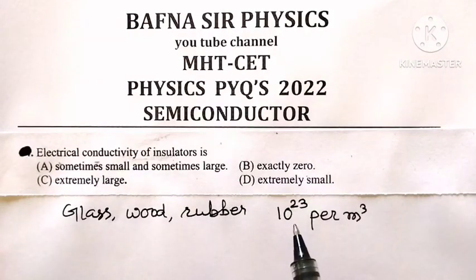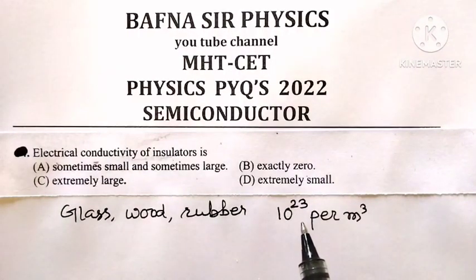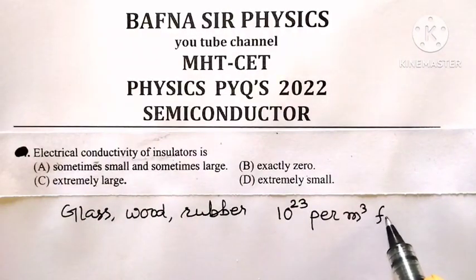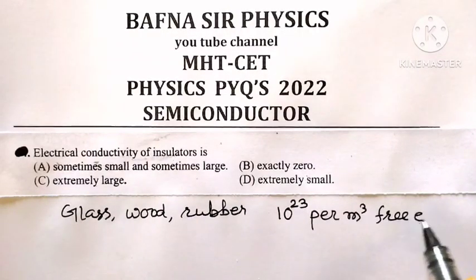It is 10 raised to 23 free electrons available per cubic meter of that material. And due to the availability of such a small number of free electrons,